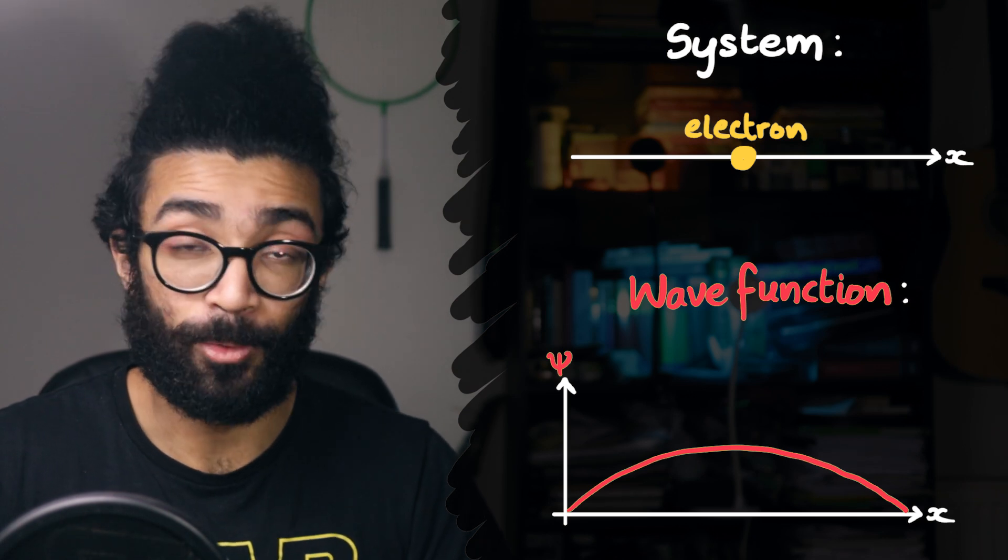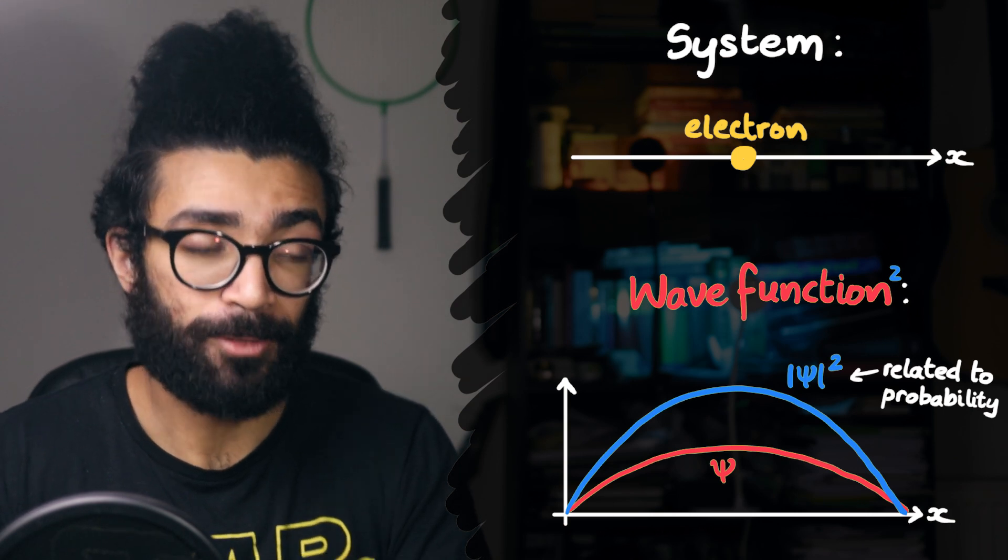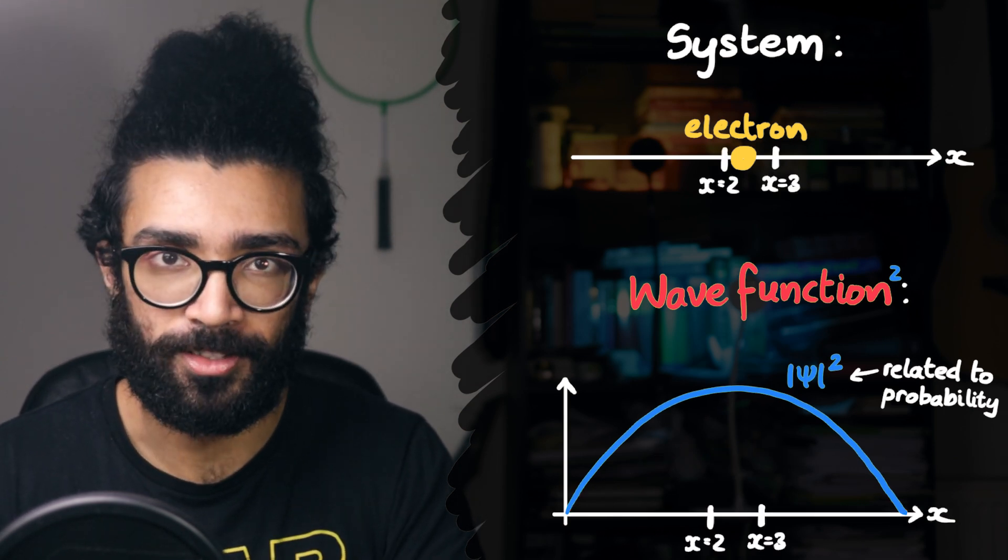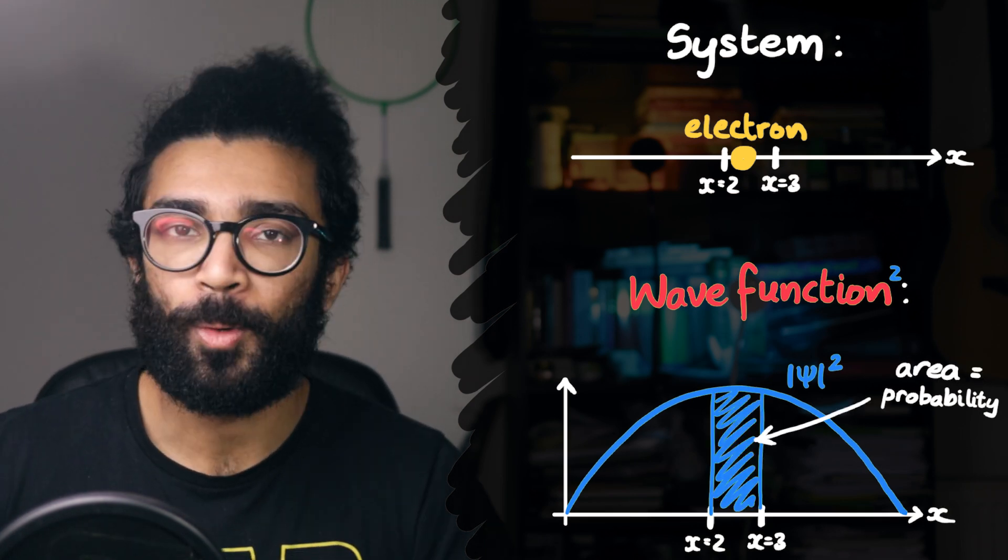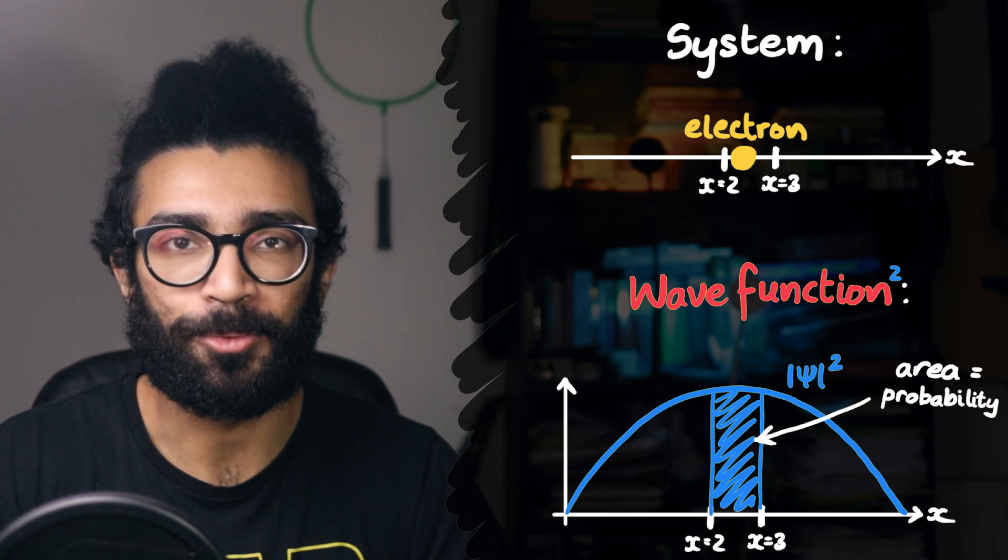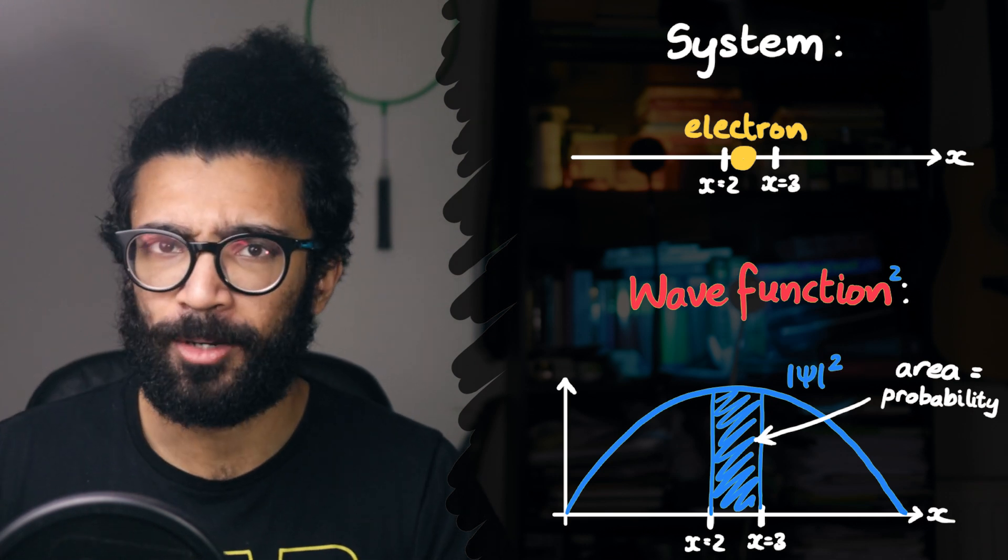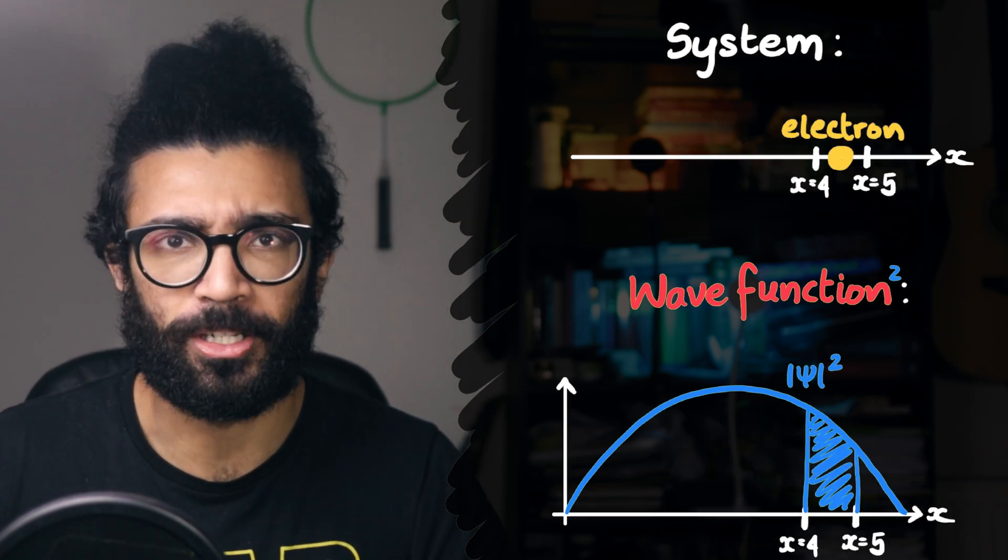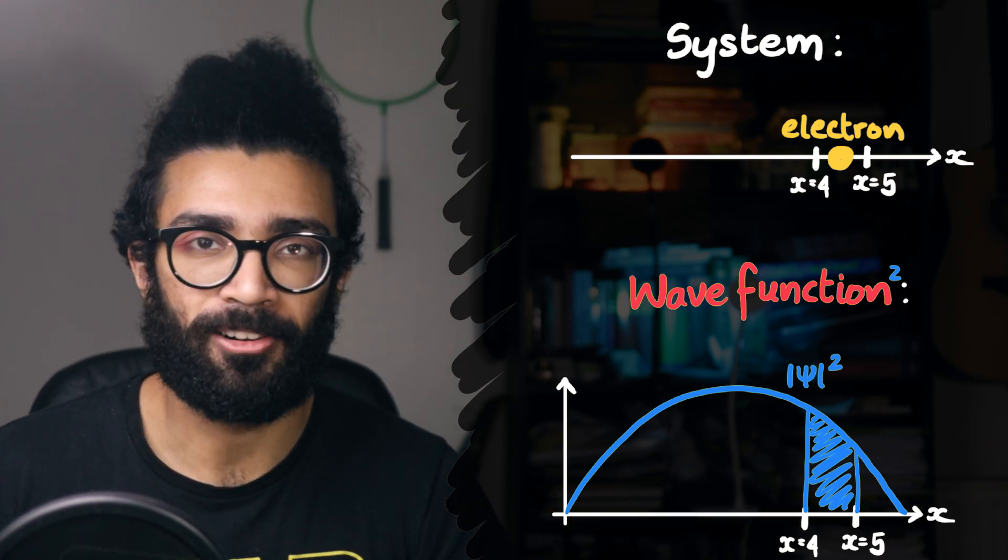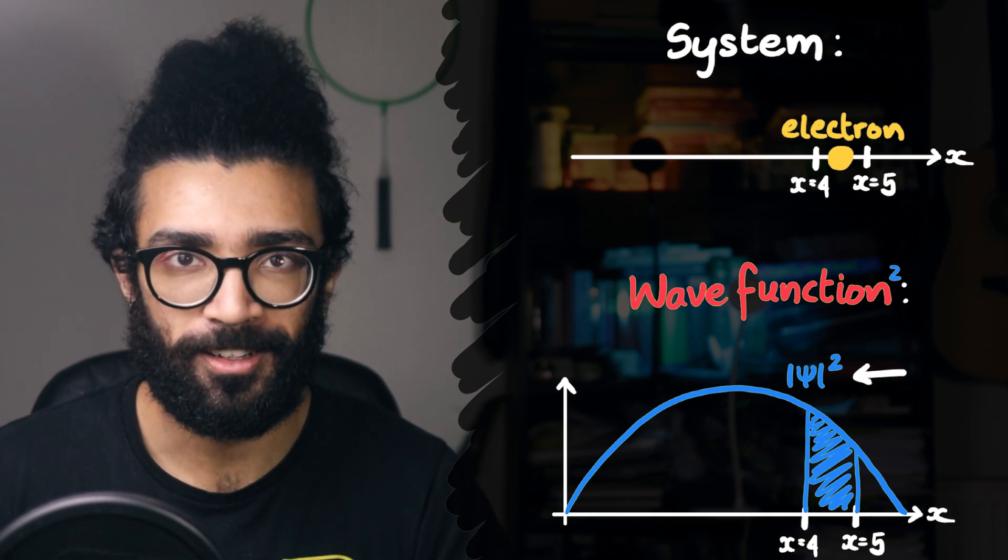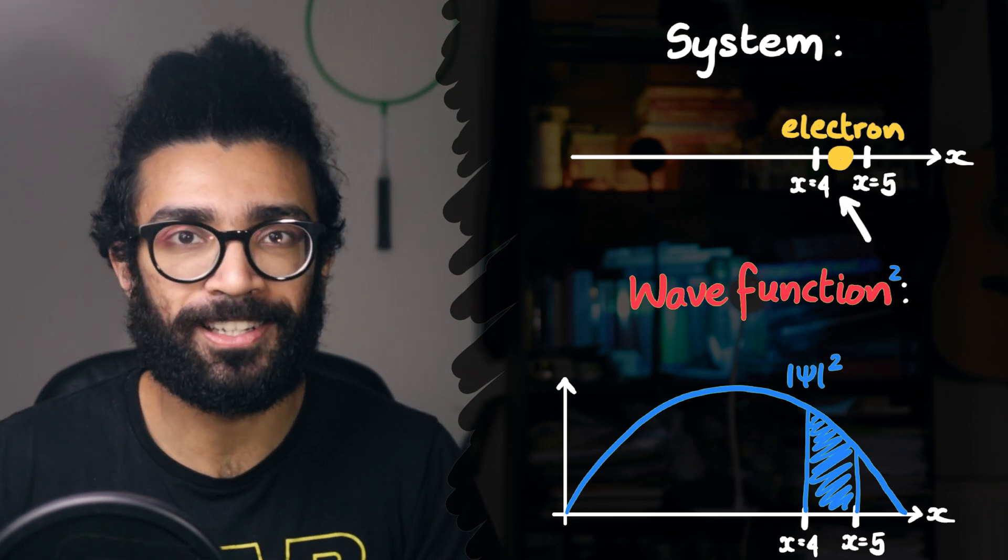Now specifically, the probability of finding our electron in different regions of space can be found when we square our wave function. Technically, when we take the square modulus of our wave function. So if our wave function looks like this, then when we square it, it looks like this. And then we can calculate the probability that we'll find our electron between these two x-positions by finding the area under this wave function squared graph. What we mean by this is that it's highly likely we'll find the electron between these two x-positions because this area is big, but it's less likely that we'll find it between these two x-positions because the area is slightly smaller.